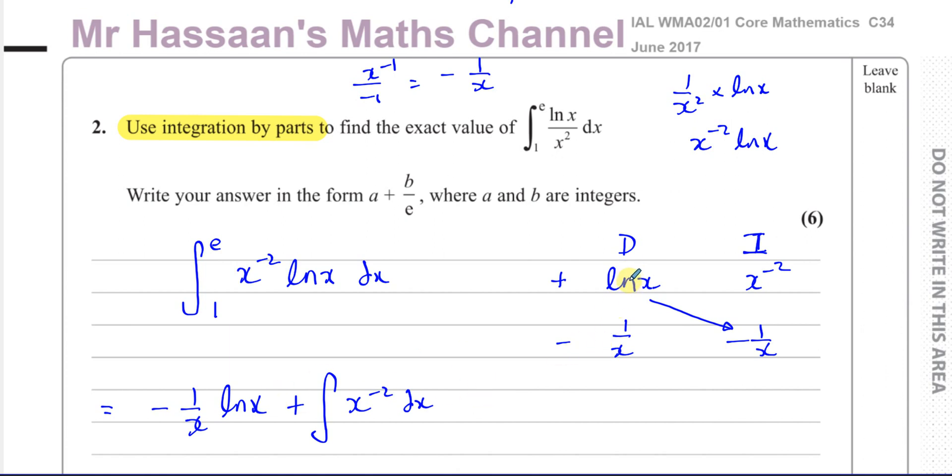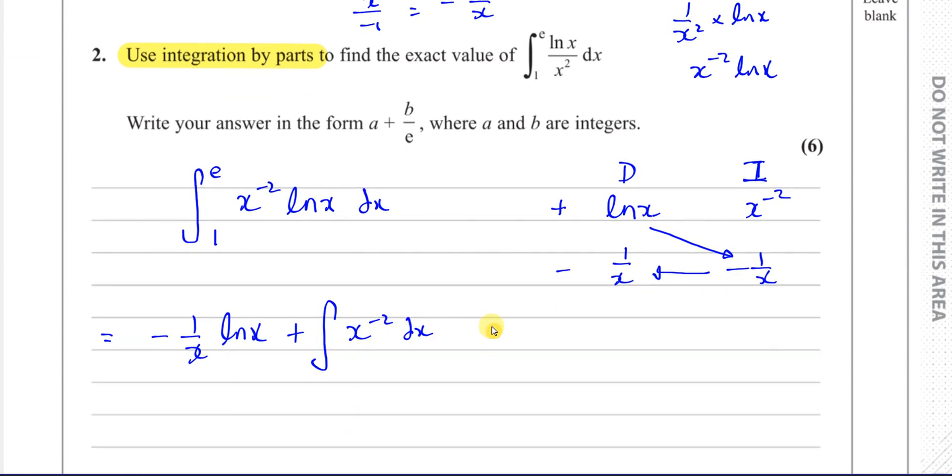This is where, when you have this not becoming 0, it's a combination of the DI method and the normal method. This would be U, this would be V, this would be DU/DX, this would be V. So we say U times V minus the integral of V times DU/DX. So this is exactly the same thing. We have to go across this time now because we can't go any further because we will never get a 0 here.